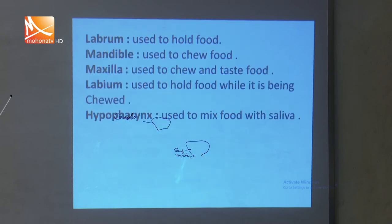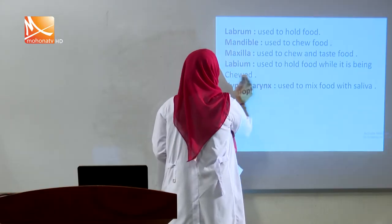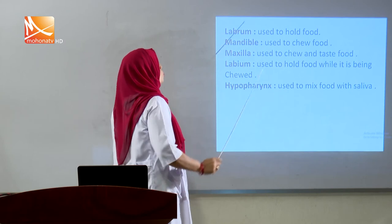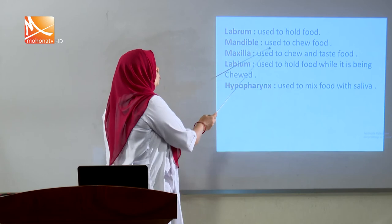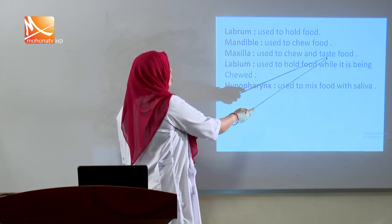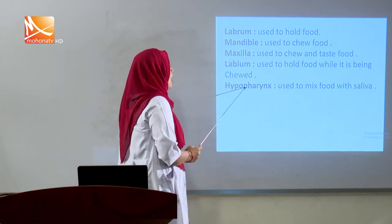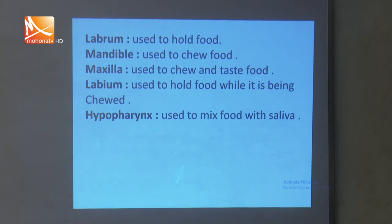Now the functions of the mouth parts: labrum is used to hold food; mandibles are used to chew food; maxillae are used to chew and taste food; labium is used to hold food while it is being chewed; and hypopharynx is used to mix food with saliva. These mouth parts have various functions related to digestion.